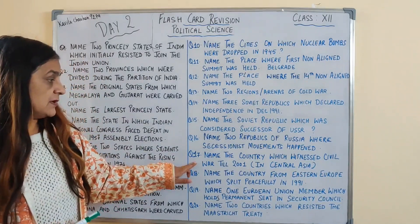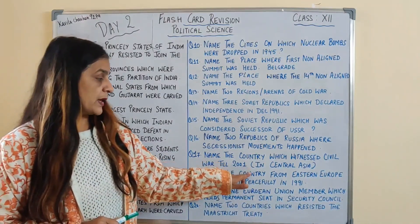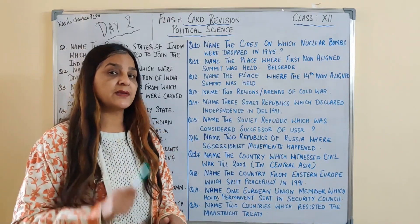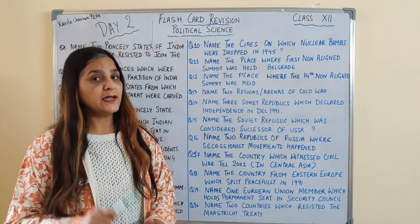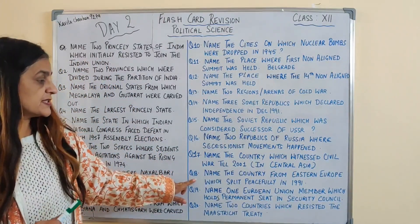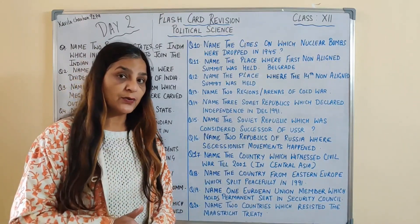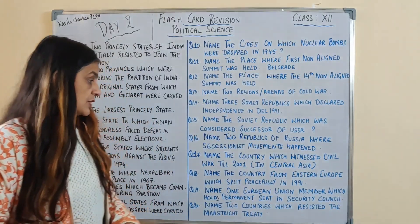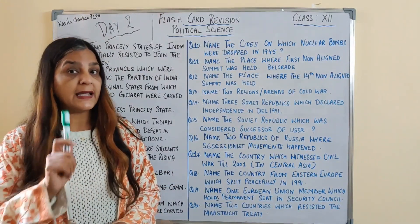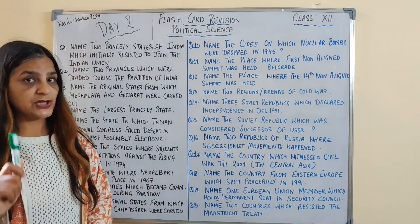Question number 17: name the country which witnessed civil war till 2001. Central Asia ki kaunsi country thi jahan pe 2001 tak civil war rahi, and iska answer hai Tajikistan. Name the country from Eastern Europe which split peacefully in 1991. Jab communist regimes break down ho rahe the to kaunsi country thi Eastern Europe ki 1991 mein jahan pe split hua lekin peaceful tarike se, and iska answer hai Czechoslovakia.